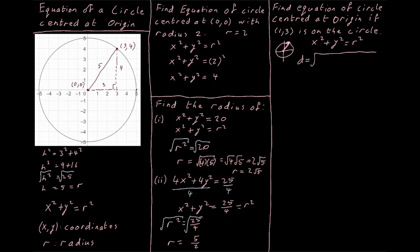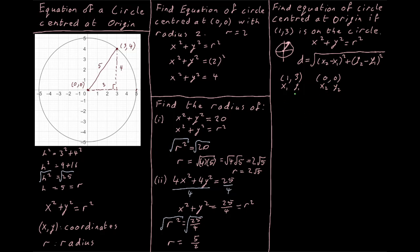The distance between two points is the square root of (x2 minus x1) squared plus (y2 minus y1) squared. I label (1, 3) as my first point and (0, 0) as my second point — x2, y2. It doesn't matter which you pick as x1, y1, so long as we have x and then y for each coordinate.